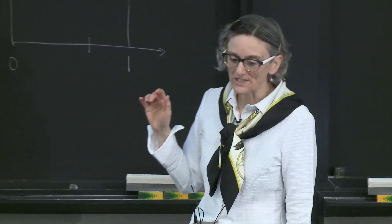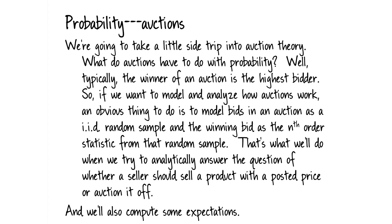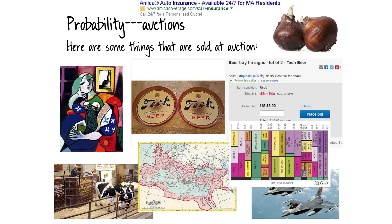We'll also compute some expectations along the way to get practice. Here are some things sold at auction. There's a Picasso — if you wanted to liquidate that, you'd probably go to Christie's or Sotheby's and auction it off rather than list it on Craigslist at a posted price. Start thinking about that question: why sell at auction versus at a posted price?